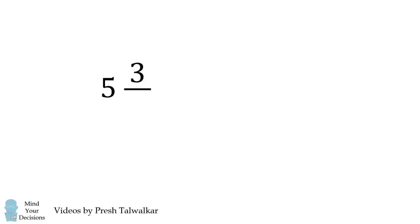5 and 3 over some number multiplied by another number and one-half is equal to 19. Solve for the two numbers.